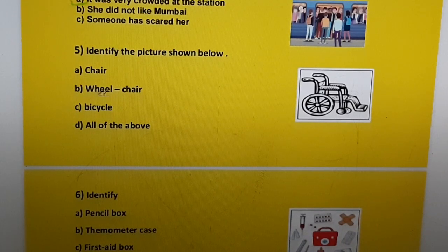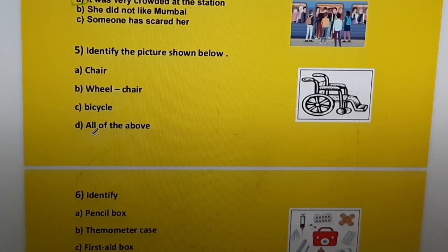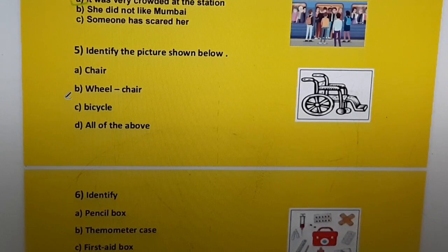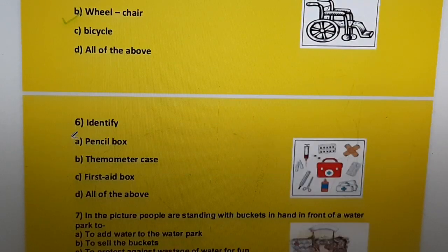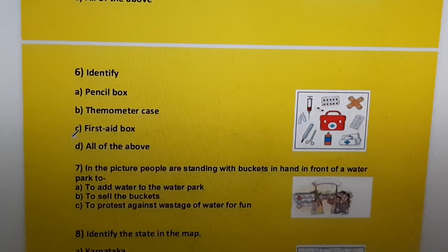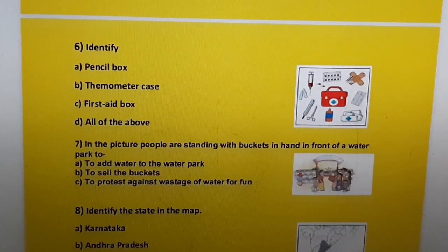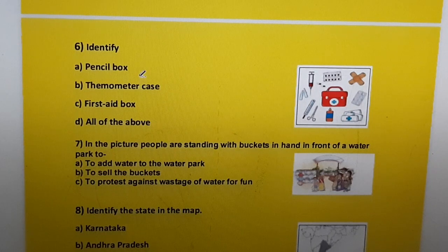Question five: Identify the picture shown below. Options are a) chair, b) wheelchair, c) bicycle, d) all of the above. The correct answer is b) wheelchair.